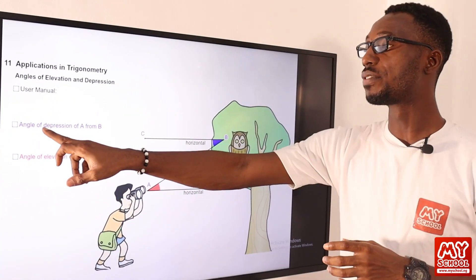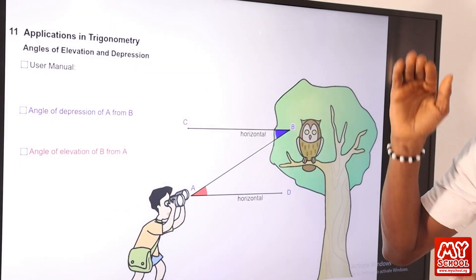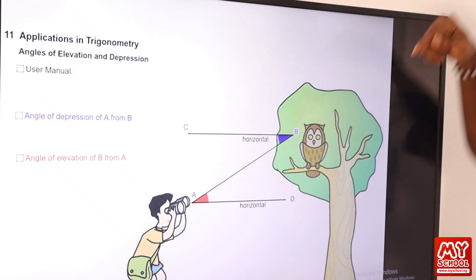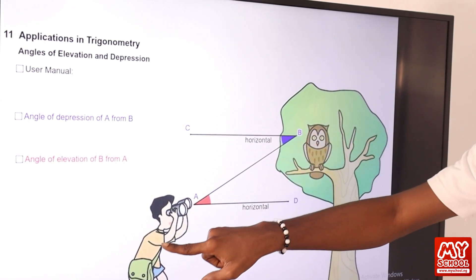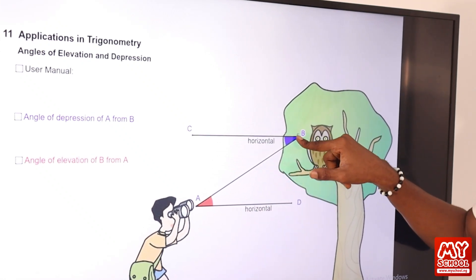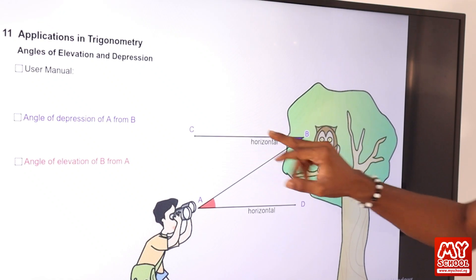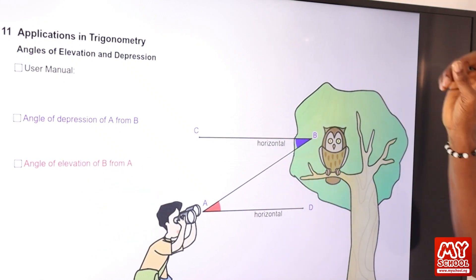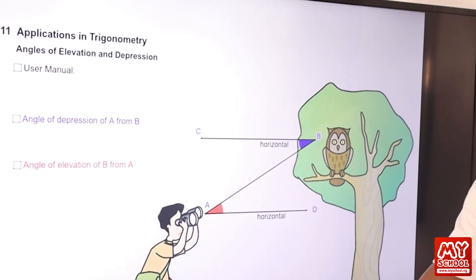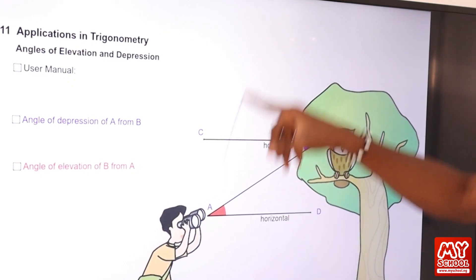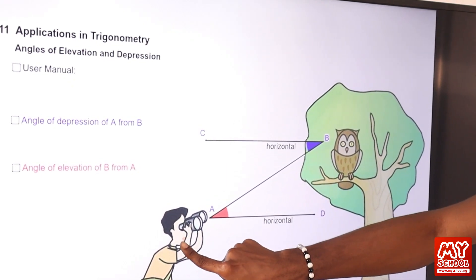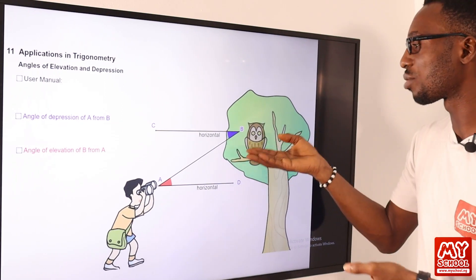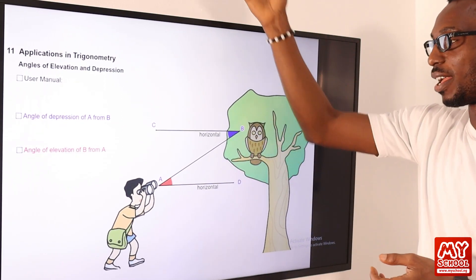We can see the angle of depression of A from B. When you say something undergoes depression, you are looking at something from the top downwards. You can see the bird looking at the photographer or explorer from the top of the tree — that is depression. The angle of elevation of B from A means something is coming from the bottom going to the top. The photographer is looking at the bird on the tree, having to elevate his line of sight to look at the bird up there.